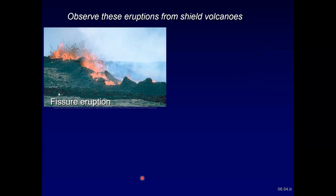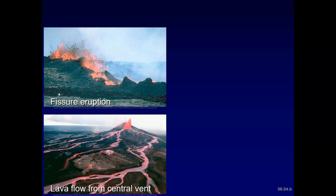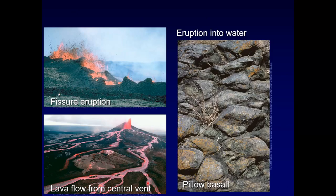Here are some shield volcano eruption types. First, a fissure eruption is when lava flows out of a fissure fed by dikes. A lava flow spreads out and flows downhill naturally. We can then have eruption into water — that'll make seawater boil, produce steam, and add new land. That's how we get pillow basalt: lava erupts into water and forms these rounded shapes called pillows. Those examples are from the San Juan Islands in Washington and from Hawaii.